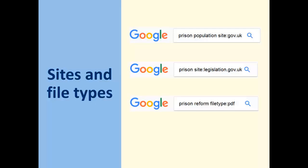If it's reports that you're after, they are normally published in PDF format, so why not try using the file type command? For example, 'prison reform filetype:PDF'.